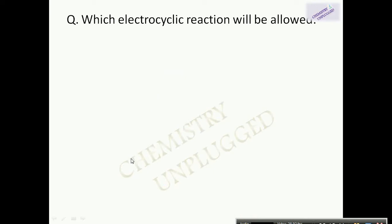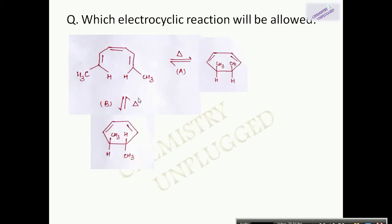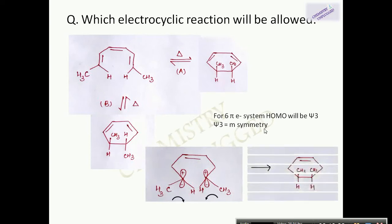The next question asks which electrocyclic reaction will be allowed. Both reactions are thermally induced, giving products A and B. The reactant has a 6 pi electron system. For 6 pi electrons the HOMO is psi 3, which has mirror symmetry. Mirror symmetry means only disrotatory movement can lead to sigma bond formation, so product A corresponds to the allowed reaction.